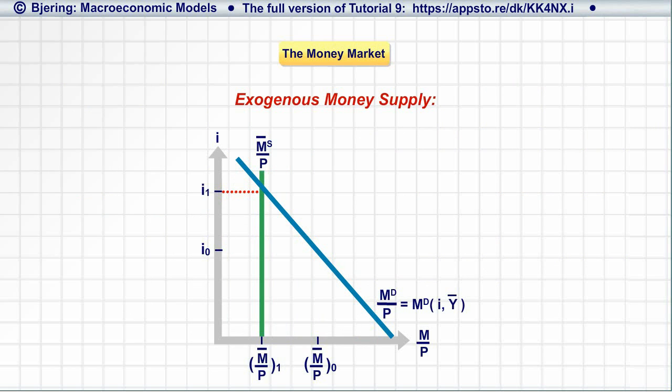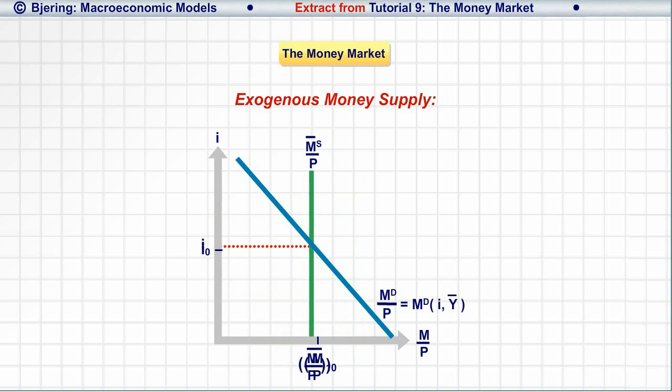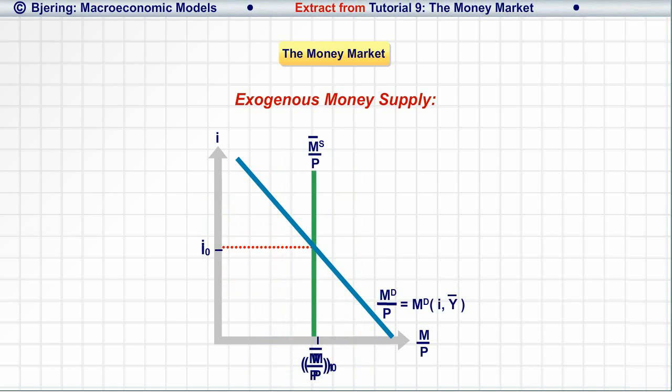So, the central bank adjusts the real money supply to generate a desired, but market-driven, target interest rate.